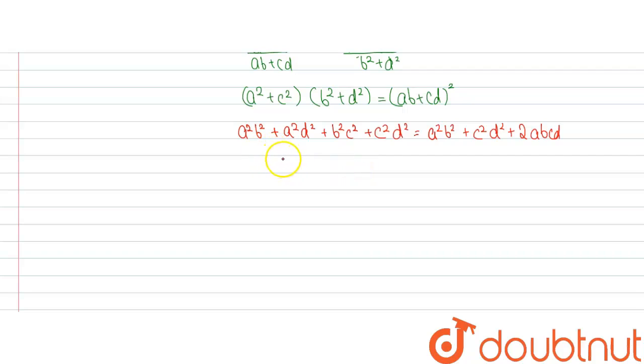So we will get from this equation, a²b² will coincide with each other and c²d² also. So we will get a²d² plus b²c² is equal to twice of abcd.